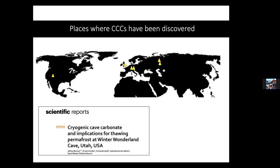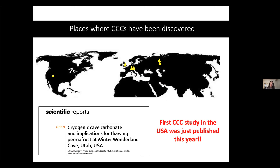Where have CCCs been discovered so far? First in Europe, where they were just being discovered when I was doing my PhD there. Then also in England and in Russia. CCCs weren't discovered in the U.S. until 2018, and the very first paper on CCCs in the Western Hemisphere was published just this year. This is brand-new territory for scientists — we're really starting to understand what CCCs represent and what they can tell us about past climate.